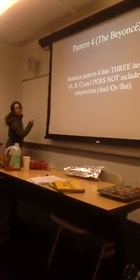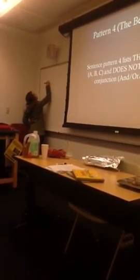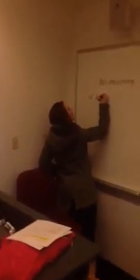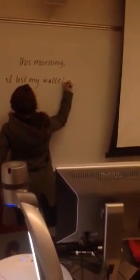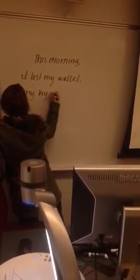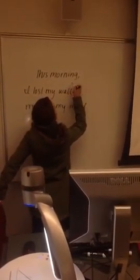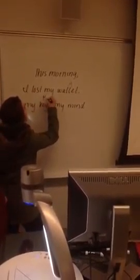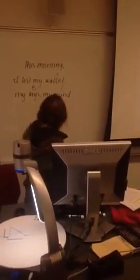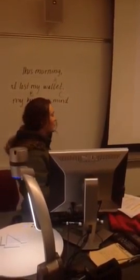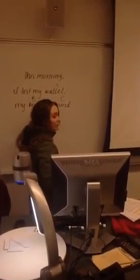I'll give you an example. 'This morning, I lost my wallet, my keys, my mind.' We have items A, B, and C. My wallet is A, my keys is B, and my mind is C. I could put a conjunction in — I could add 'and' before 'my keys.' Listen to it without a conjunction: 'This morning, I lost my wallet, my keys, my mind.' Now with 'and': 'This morning, I lost my wallet, my keys, and my mind.' It loses the staccato sound.